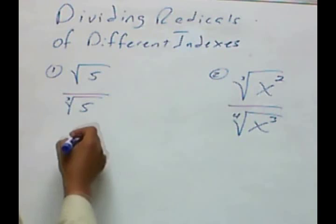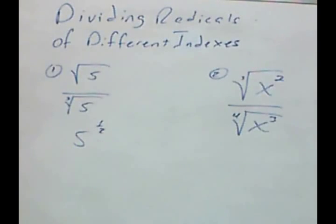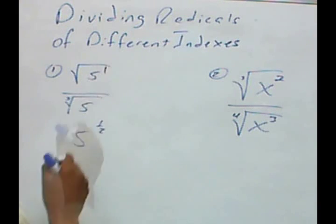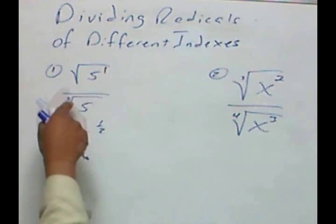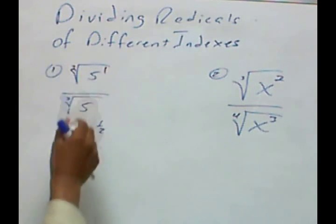I'm going to convert these both to fractions. So we have 5 to the 1/2. Where the 1/2 comes from: the 1 comes from the exponent of the understood 5, or the 5 of the understood 1. The 2 comes from the fact that this is a square root.